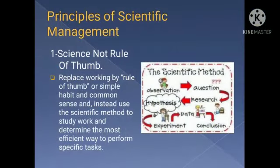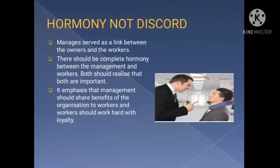The first principle is Science, not rule of thumb — replace working by rule of thumb or simple habits and common sense, and instead use the scientific method to study work and determine the most efficient way to perform specific tasks. The next principle is Harmony, not discord. Managers serve as a link between the owners and the workers. There should be complete harmony between management and workers, and management should share the benefits of the organization with workers, while workers should work hard with loyalty.